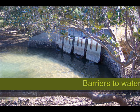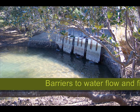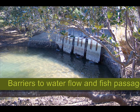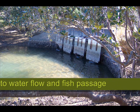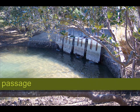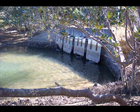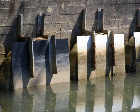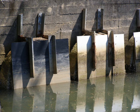Man-made barriers restrict fish passage and fish habitat. Man-made barriers include floodgates and cattle crossings. Healthy fish stocks are critical for the survival of many other species like birds and also for the success of Australia's primary industries.